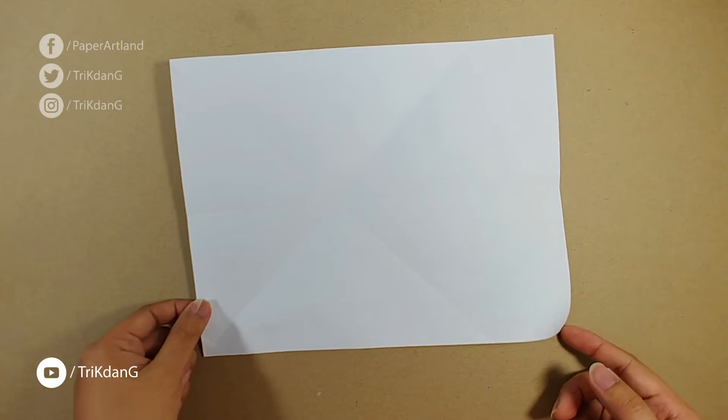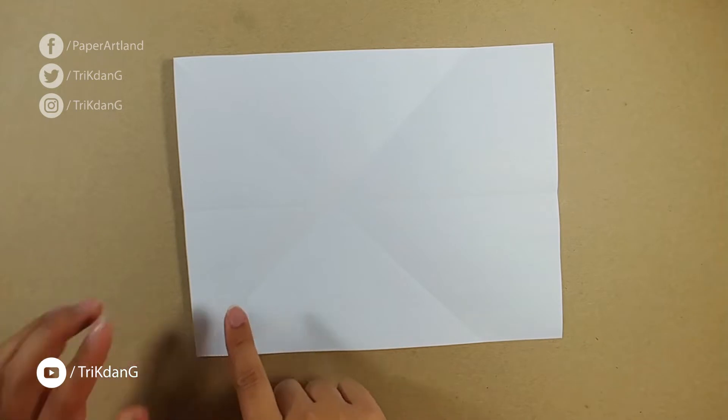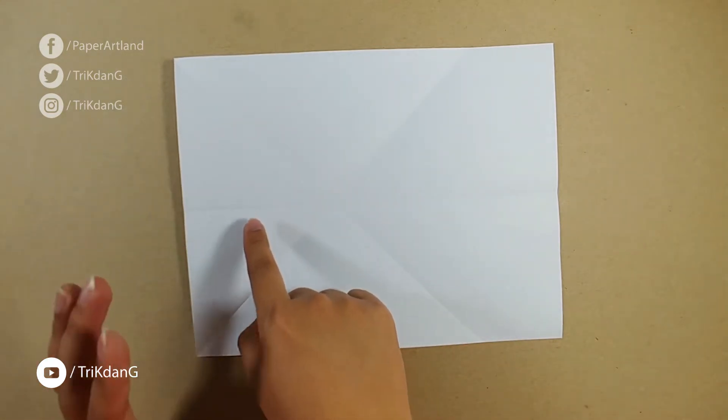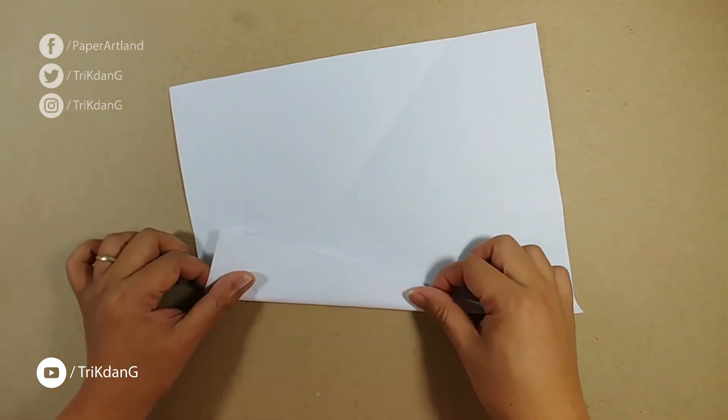On the following step, let's start from this corner. Fold it straight to the center crease. Same thing, start from this corner. When you fold it to the center crease, let's make a nice diagonal fold straight to this corner. Okay, so let's do it this way.